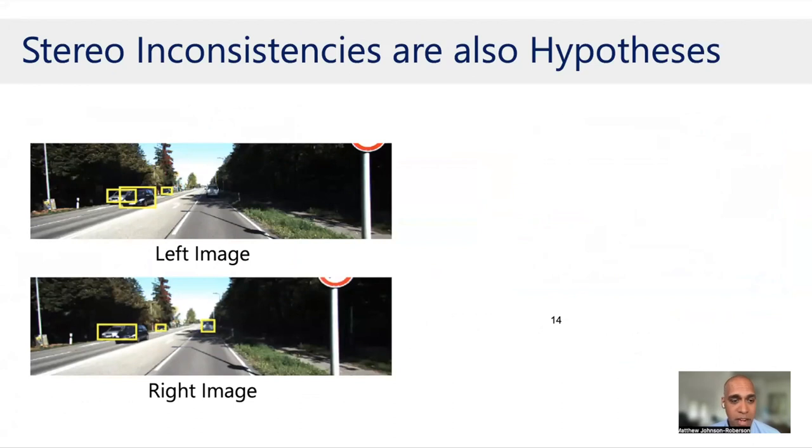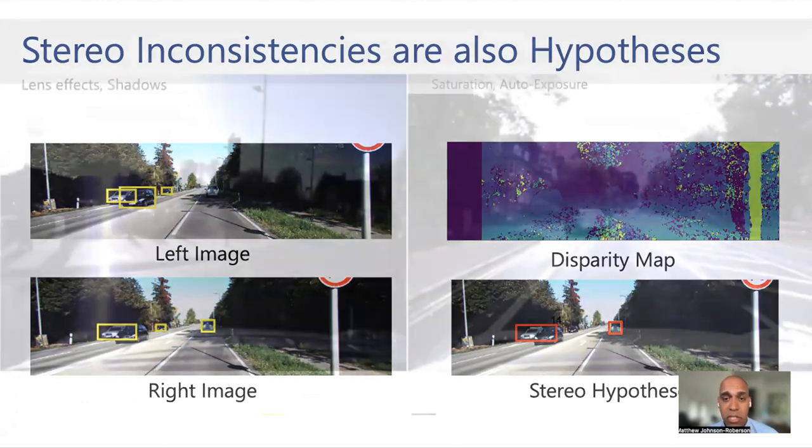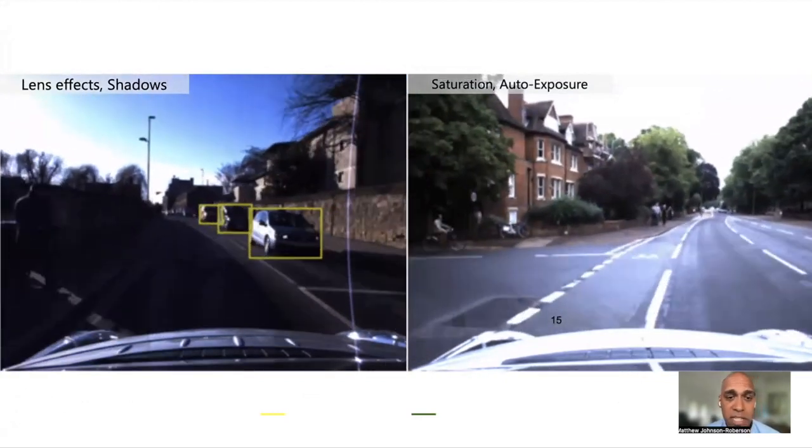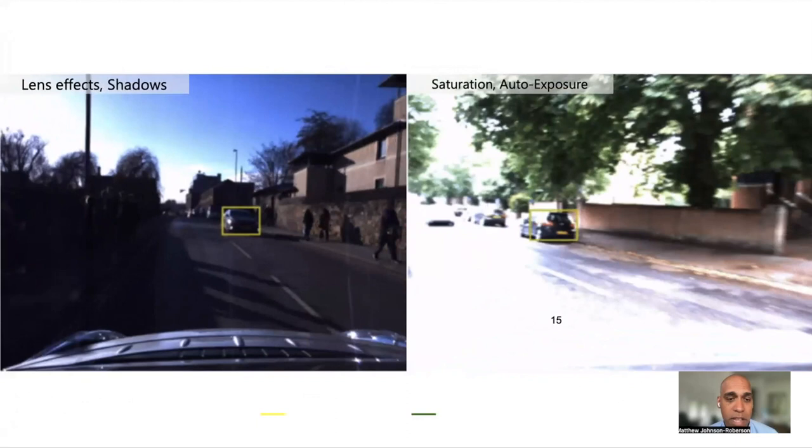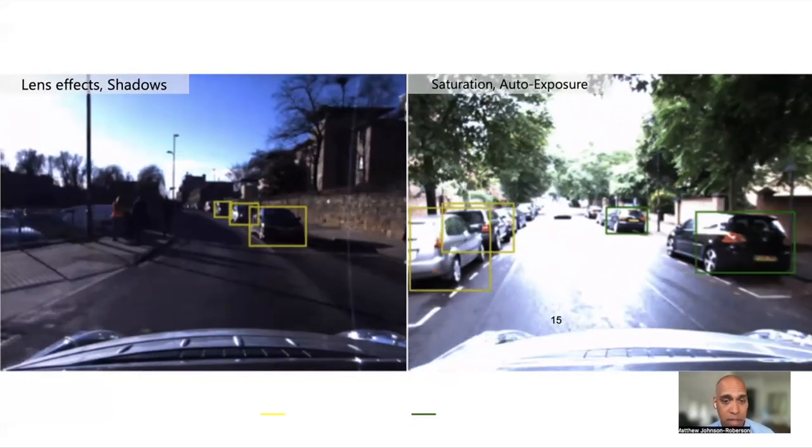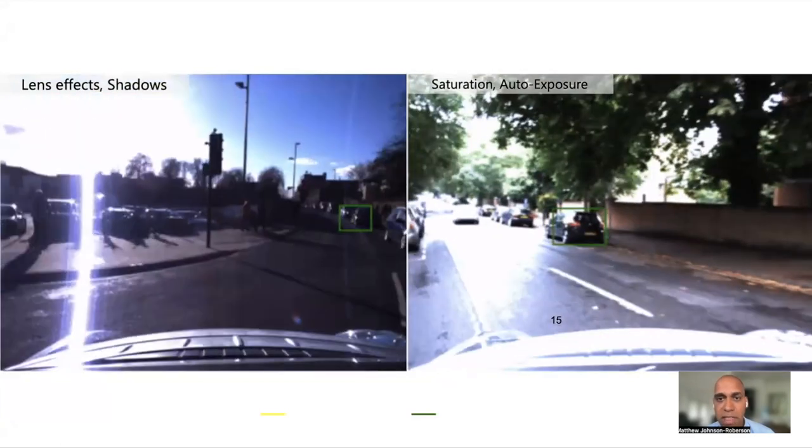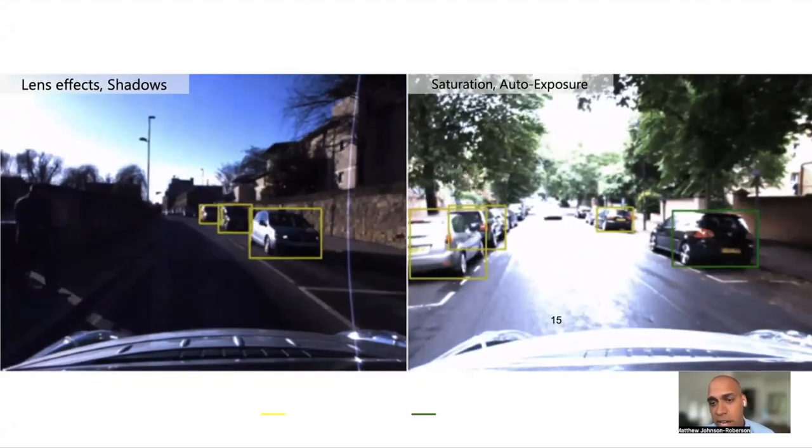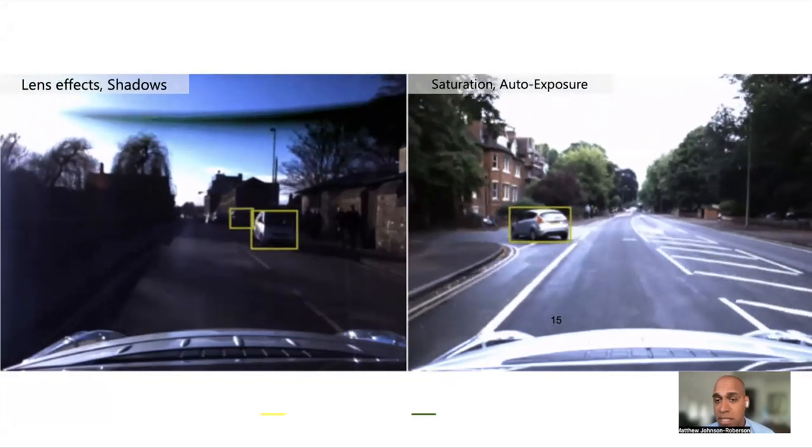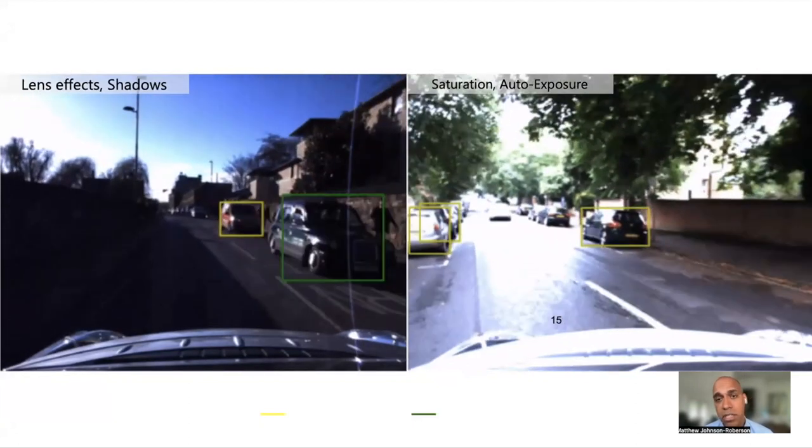He produced a binary classifier that used some hand-designed features that did a pretty good job. But again, I think one of the important pieces of this is that you can do all this without thinking about the underlying image features. So you can make it agnostic to the detectors that you're using or the trackers that you're using. And so really what we want to put forward here is a framework where we begin to think at fleet level about how do we understand the error rates of the systems we're seeing without having to go through and hand label things. In that same way, we propose that stereo inconsistencies are other hypotheses. So if you have a left and right image from Kitty, and you have a detection in one image, because we have a small baseline stereo system, you know that there should be a detection in the other.